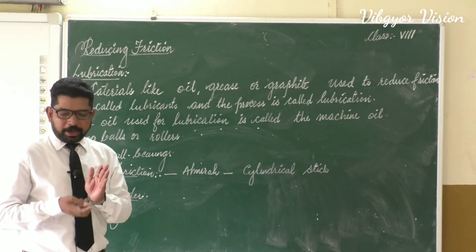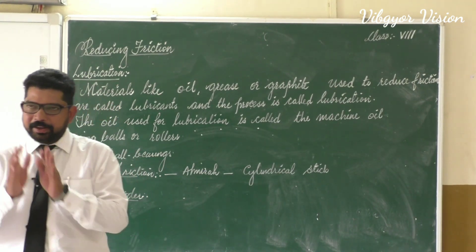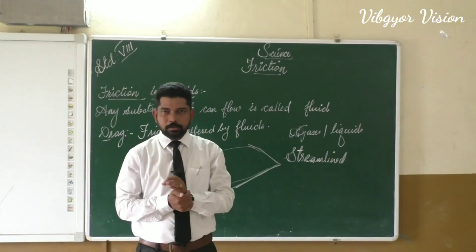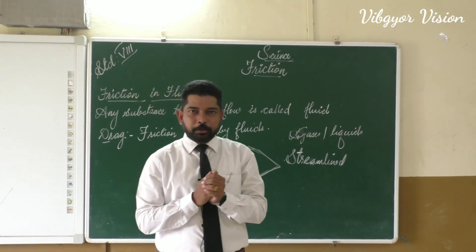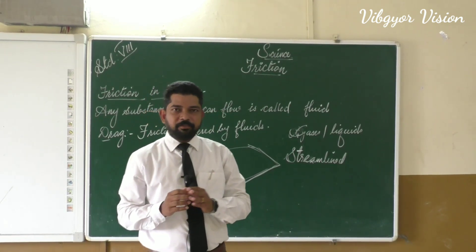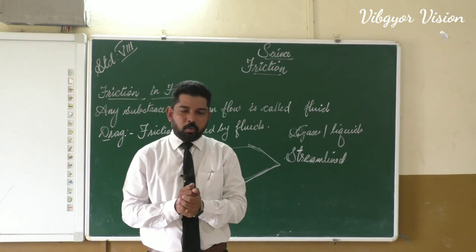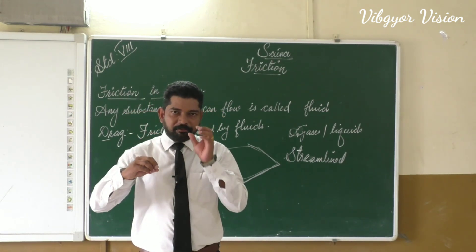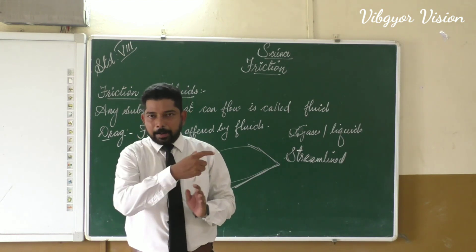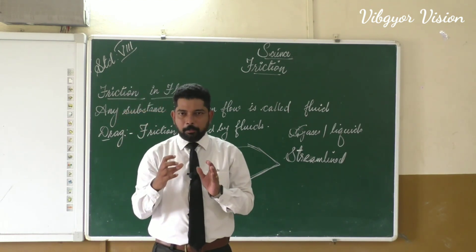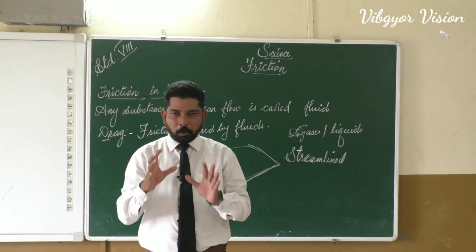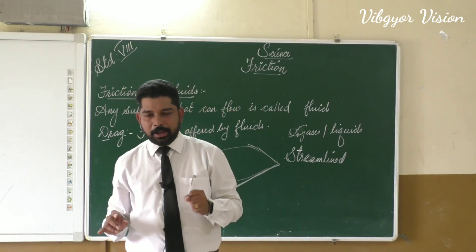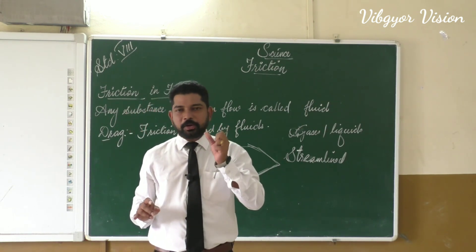So from this, we came to know that friction is necessary. Without friction, our life won't be comfortable. Now let us do an activity to know the importance of friction. For that, we need a water bottle and some mustard oil. First, take the water bottle, remove the cap, fill it with water, and remove any wrapper from outside the bottle. Now try to hold it with your hands — it will be very easy to hold.